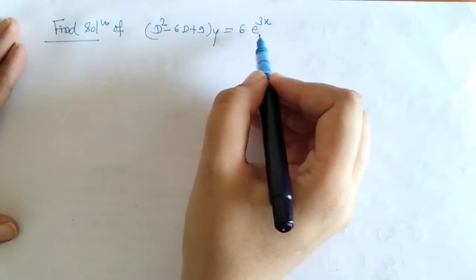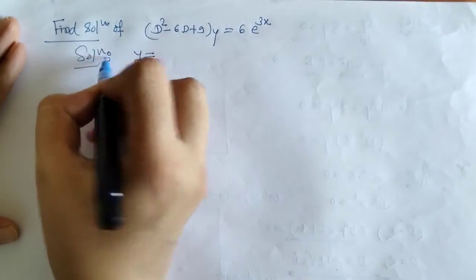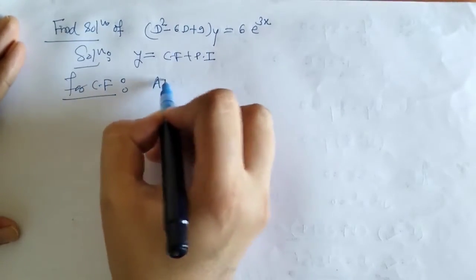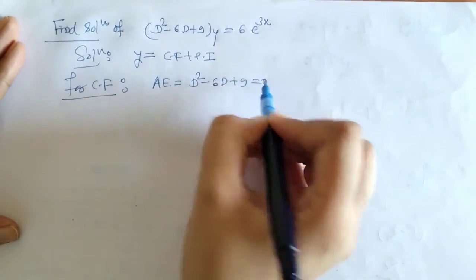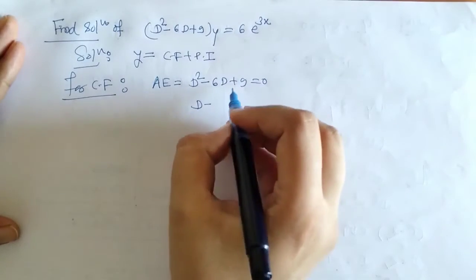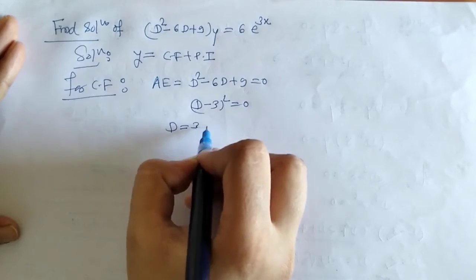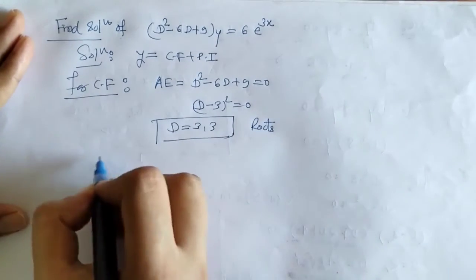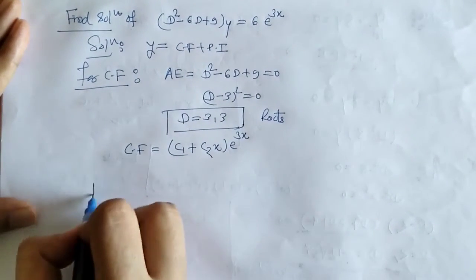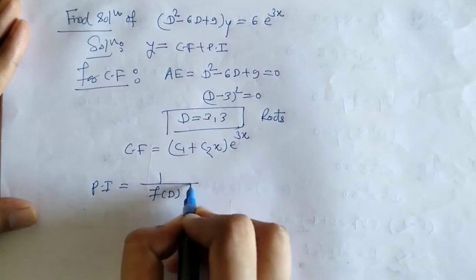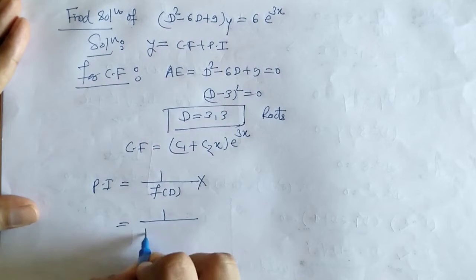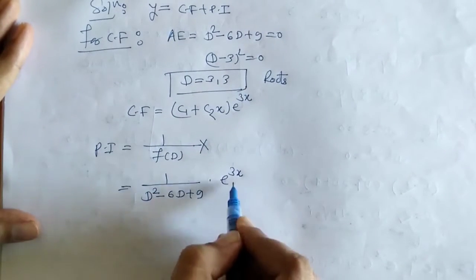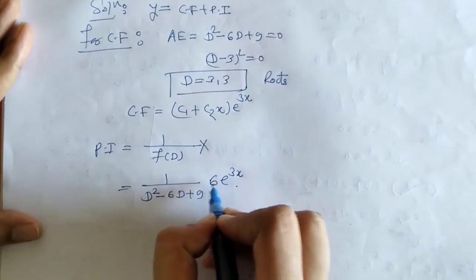Now we solve the full example: y = CF + PI. For CF we need the roots of the auxiliary equation. The auxiliary equation is this — we can check it is the square of a linear factor. So we have D equals 3 and 3; the roots are real and equal. In that case the CF is written accordingly. Now we find PI: f(D) is d² − 6d + 9, and X is e raised to 3x.